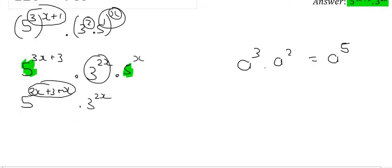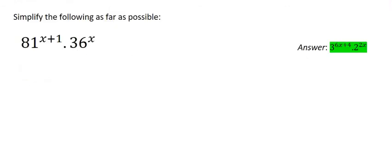And so 3x plus x is 4x. And so we're going to end up with 5 to the power of 4x plus 3 times by 3 to the power of 2x. And there's not much more that you can do with that. And so let's try this next example.